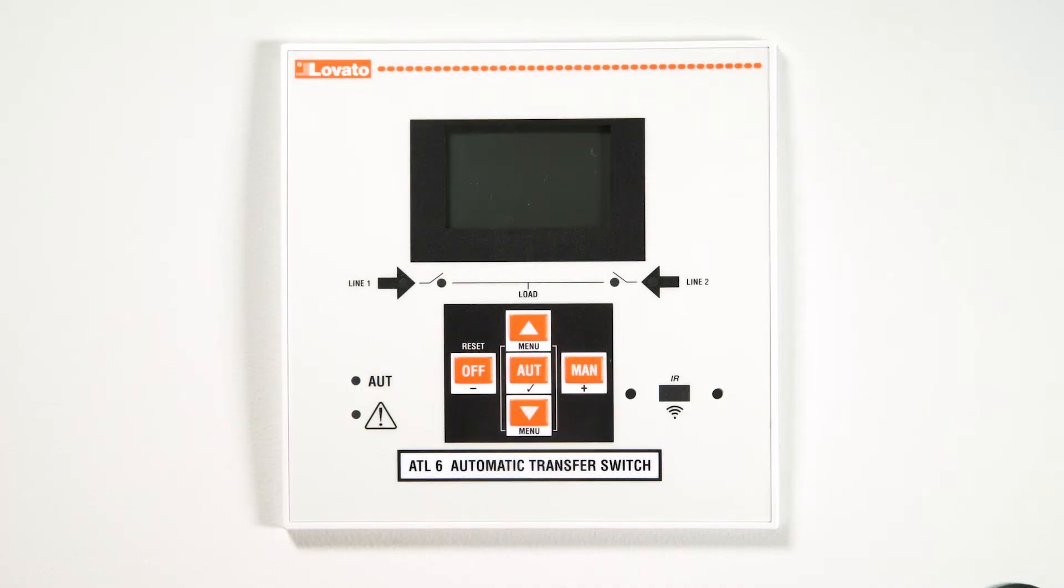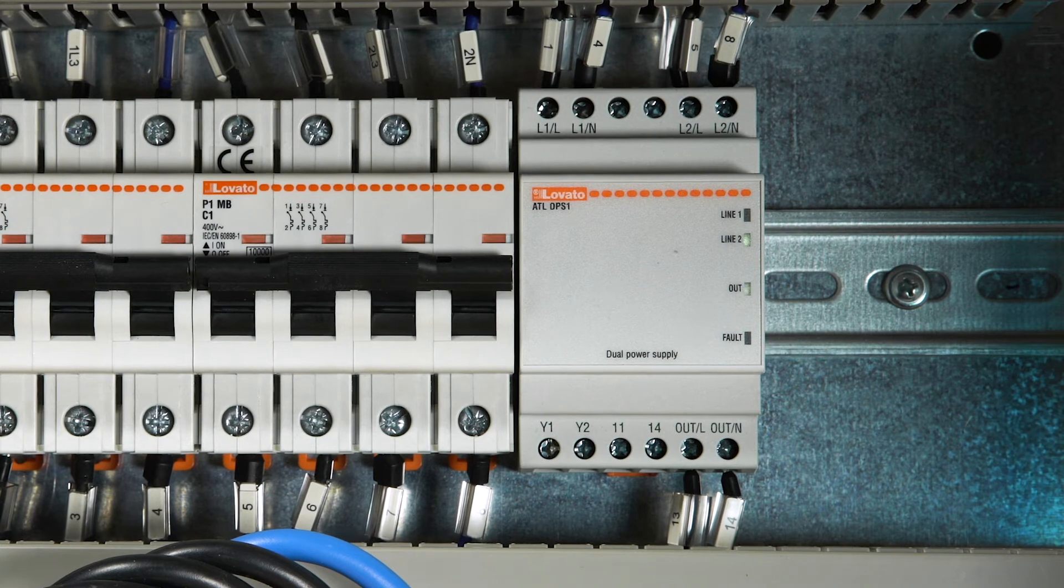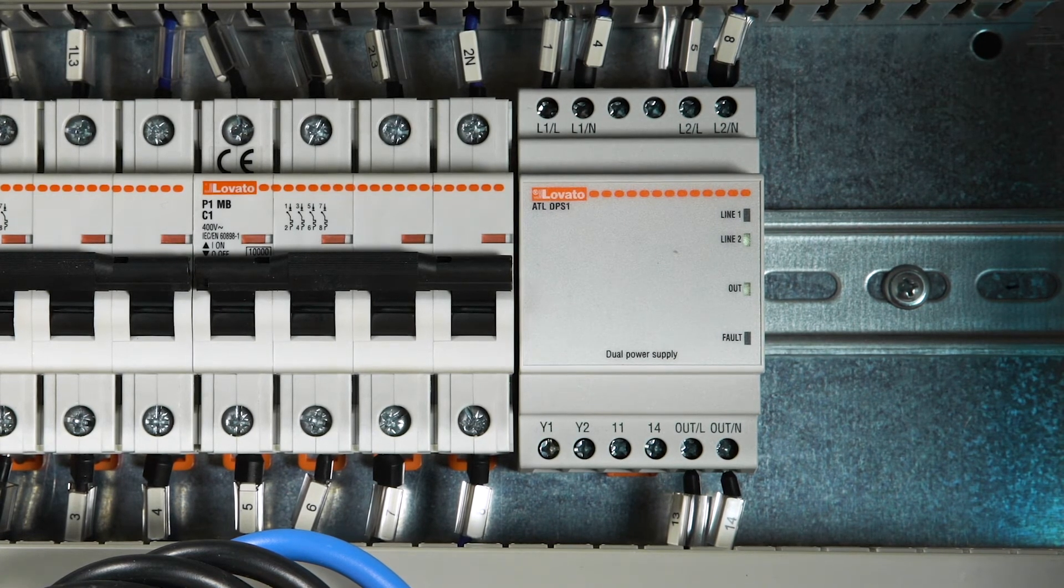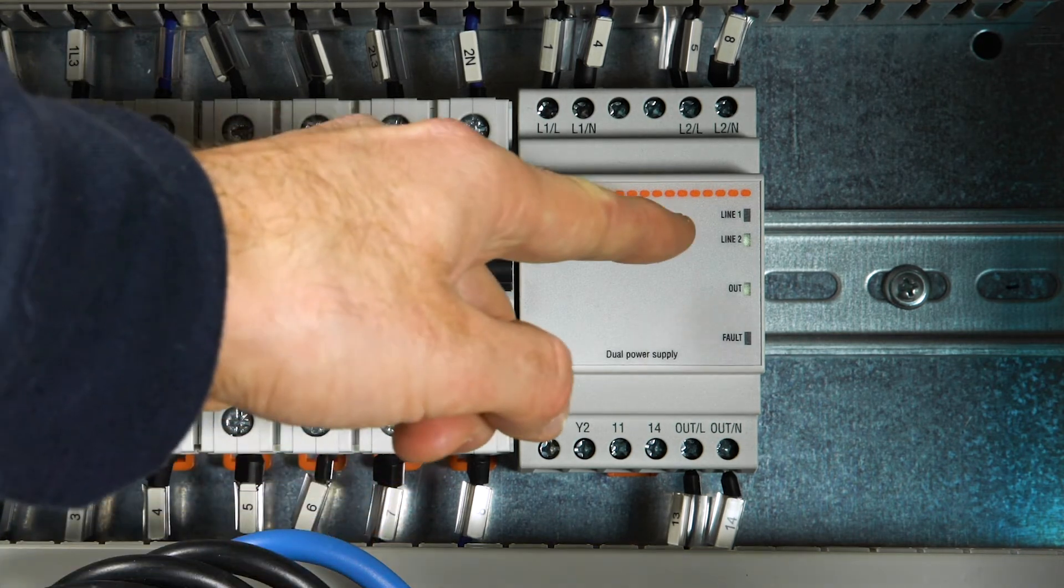If a primary mains failure occurs, the switch switches off and starts the genset. When the genset supplies power, ATL DPS1 signals the availability of power on the second auxiliary line by lighting LED 2.